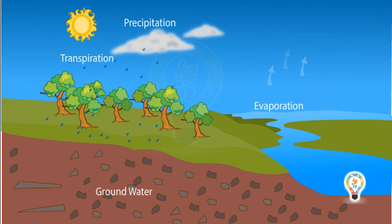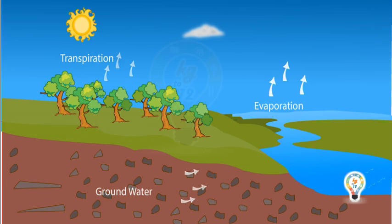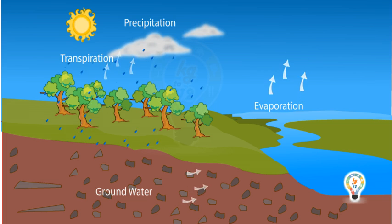This water again evaporates and the water cycle in nature goes on. This constant circulation of water is known as water cycle.